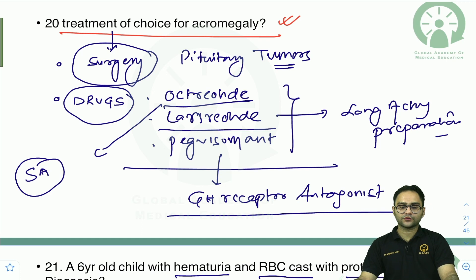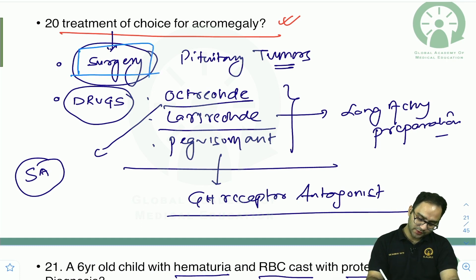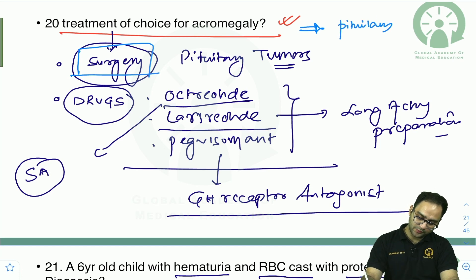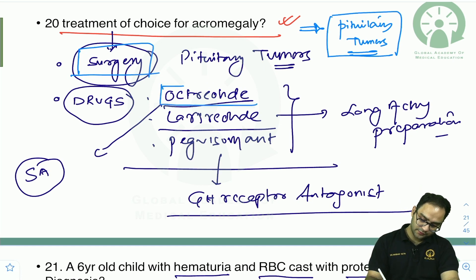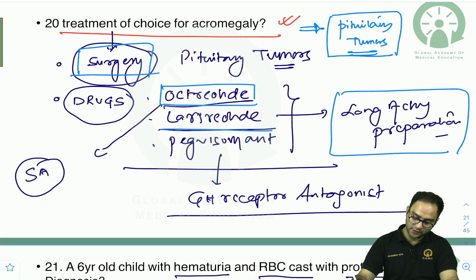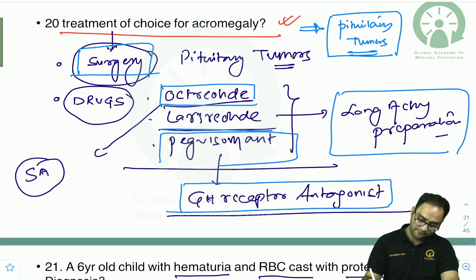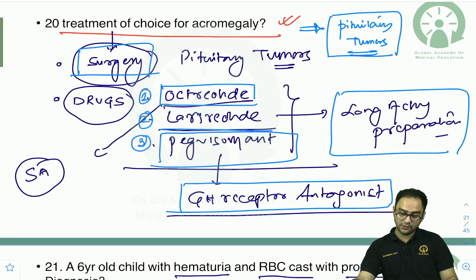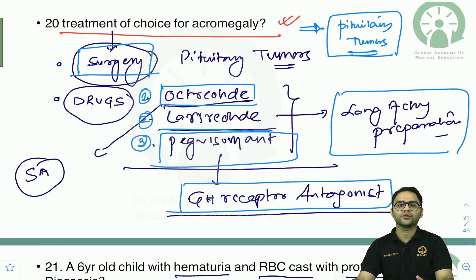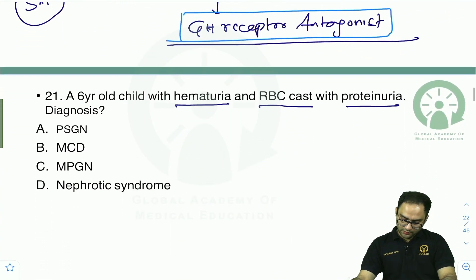Treatment of choice for acromegaly when surgery is mentioned: surgery is first-line since acromegaly arises from a pituitary tumor. Drugs available include octreotide (short-acting), lanreotide (longer-acting), and pegvisomant (growth hormone receptor antagonist).